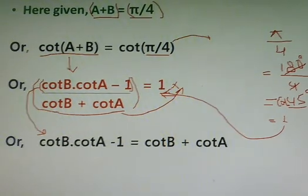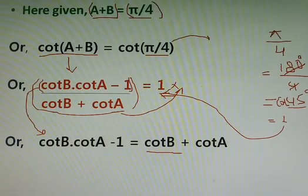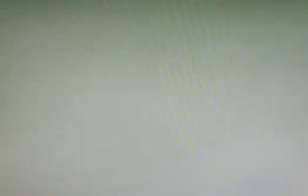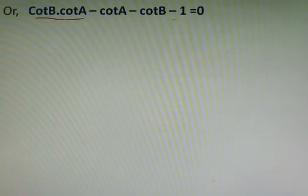After this step, we will bring both of these cot B and cot A on the left side. Since cot B has sign positive and cot A also has sign positive, bringing them on the left side, they will get minus sign as side changes, sign changes. So that would be equals to cot B into cot A, that was already on the left side, and this cot A and this cot B come from the previous step, and minus 1 was already there.